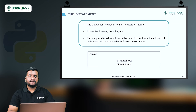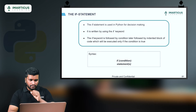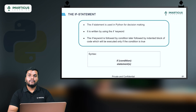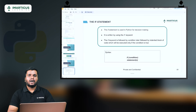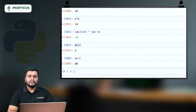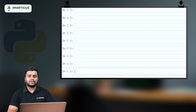The first conditional statement is the if block. The if statement is used in Python for decision making. When we are running Python code, there are certain instances where we require to change the course of action. The if keyword is followed by a condition, and if the condition is true, the statement below the if condition will get executed.